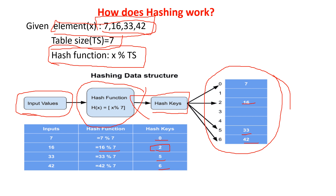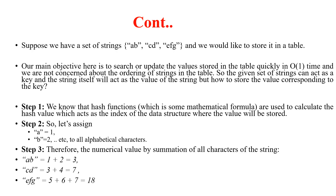Now sometimes you will get a string — then how will you store that string in the hash table? The hash function always works on numerical values. So in the next example I will explain using strings like 'abcd' and 'efg' — how will you calculate the index? To store strings in the hash table, what you do first is assign every character some numerical value.